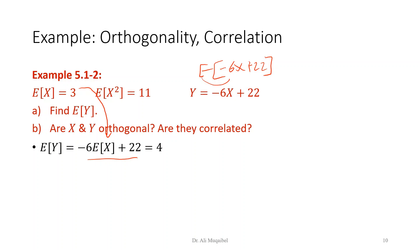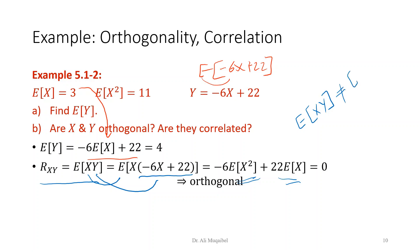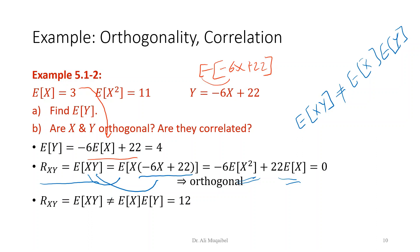The second question: are X and Y orthogonal, and are they correlated? Find E[XY]. By definition E[XY] = E[X(-6X+22)] = E[-6X² + 22X] = -6*E[X²] + 22*E[X] = -6*11 + 22*3 = -66 + 66 = 0. Since E[XY] = 0, X and Y are orthogonal. Also, E[XY] = 0 ≠ E[X]*E[Y] = 3*4 = 12, so they are correlated — not uncorrelated.